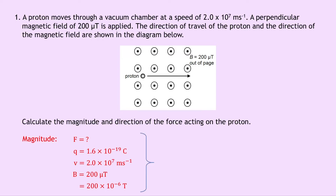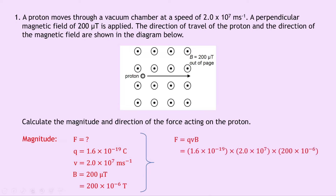Writing down our equation, F equals QVB, and substituting in the numbers gives us 1.6 times 10 to the minus 19, times 2.0 times 10 to the 7, times 200 times 10 to the minus 6. Putting all of that into your calculator, you should get an answer of 6.4 times 10 to the minus 16 newtons for the magnitude.